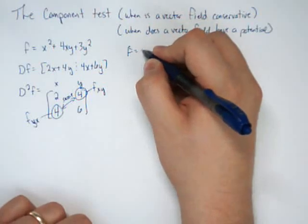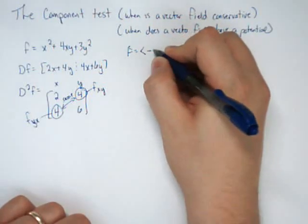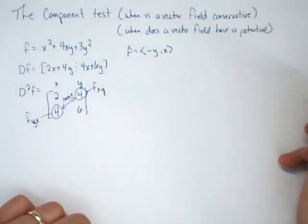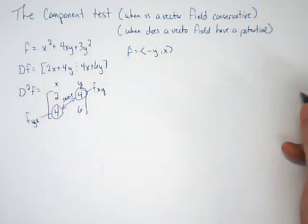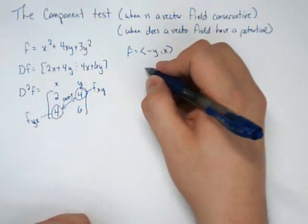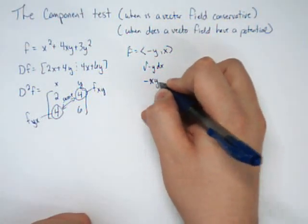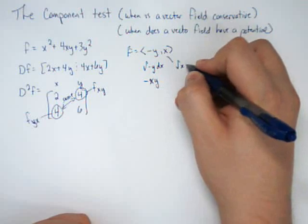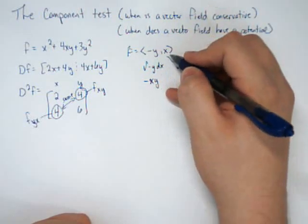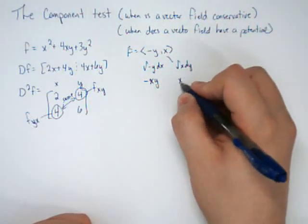Let's take a vector field such as the vector field negative y, x. Does this vector field have a potential? Well, if we just try and go about finding it and we integrate negative y with respect to x, we get negative xy. And if we integrate x with respect to y, we get xy.